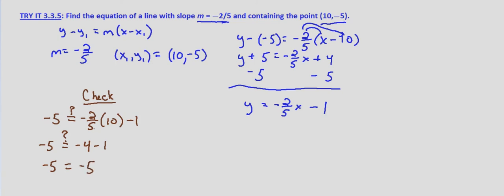So our solution checks. The equation of a line with a slope of negative two-fifths and containing the point 10, negative 5, in slope-intercept form, y equals mx plus b, is y equals negative two-fifths x minus 1.